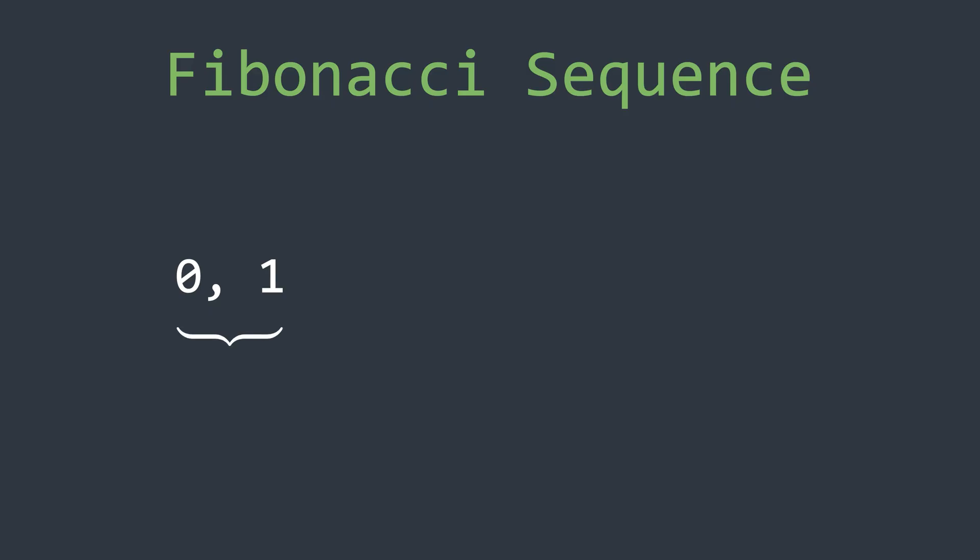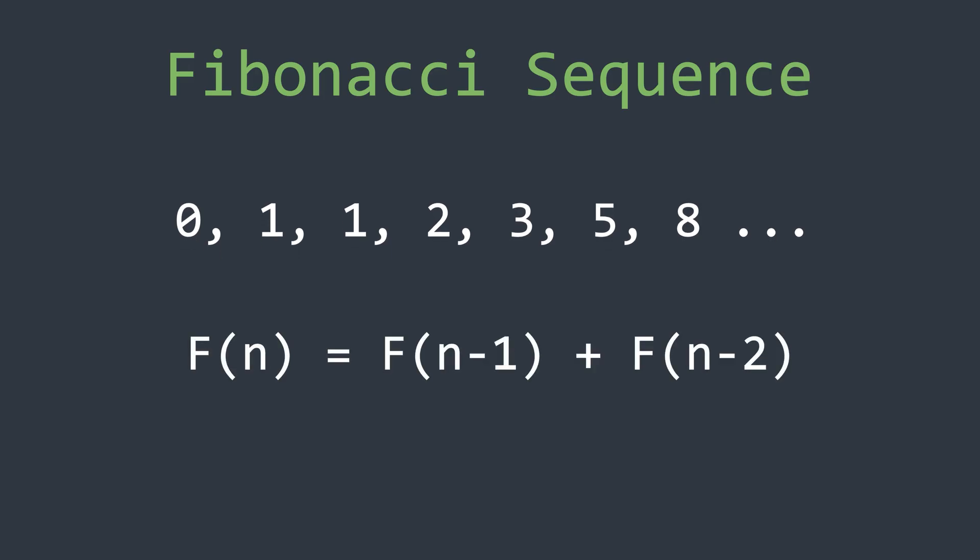So the next number here will be the sum of 0 and 1 which is 1, and then the next number will be the sum of 1 and 1 which is 2, and so on. Mathematically, it can be represented as f of n equals f of n minus 1 plus f of n minus 2, and the base cases will be f of 0 equals 0 and f of 1 equals 1.